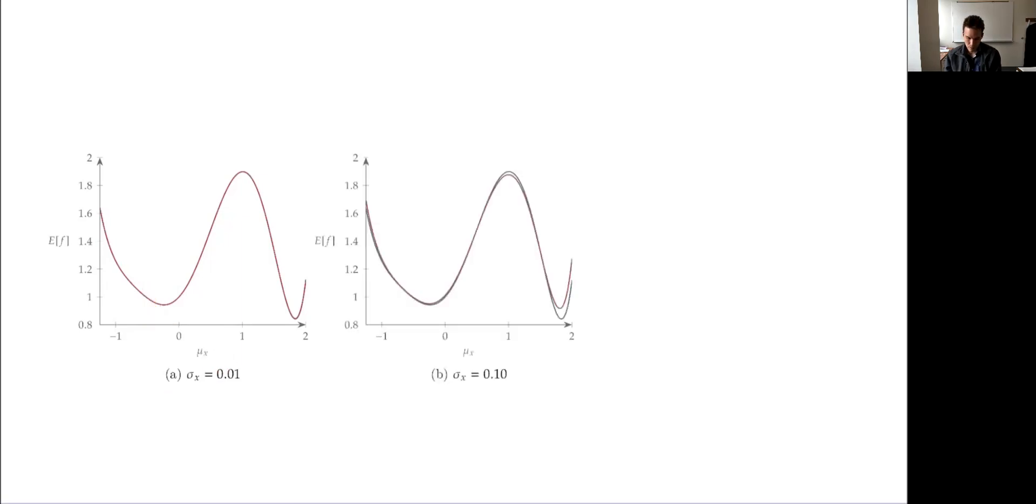Okay, so if I sampled around there and calculated the expected value, the average performance I get under that variability, for a small standard deviation, I get the line in red, which is overlapping the blue line. They look basically the same. In other words, the variability is really small, doesn't really change much. But as I increase that variability, you notice that my average performance starts to change. And as the variability gets higher, the curve can shift significantly.